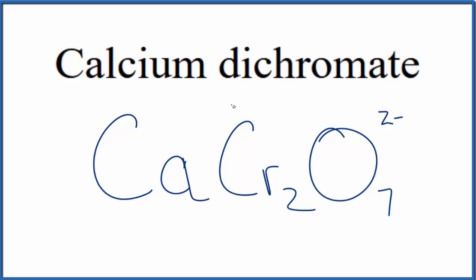So we have calcium bonded to this polyatomic ion. This is an ionic compound, and we need to take charge into account. Calcium's in group two on the periodic table, so it's going to have a two plus ionic charge.